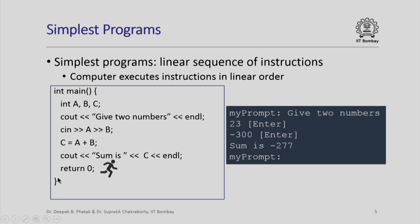Then the computer executes return 0, which basically passes control back to the operating system. Recall that the operating system had called the function main, and when the control passes back to the operating system we get back the prompt on our screen. This is exactly how a computer executes instructions in sequence as they are specified in the program.